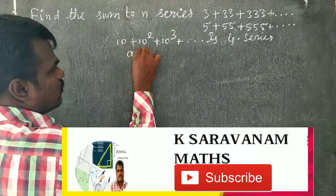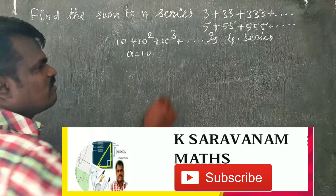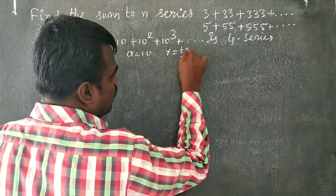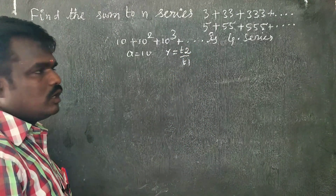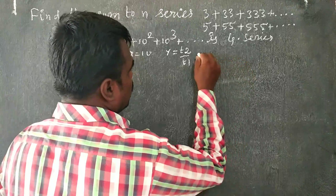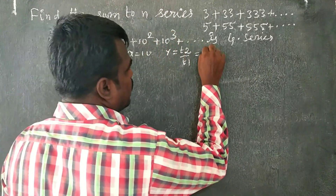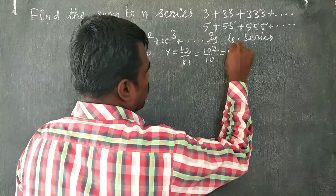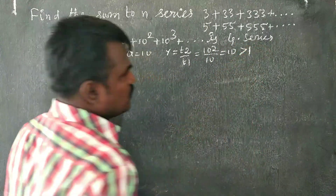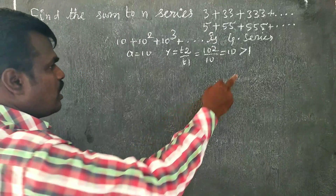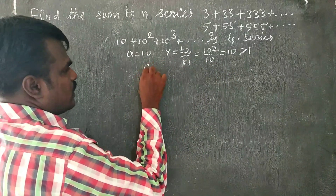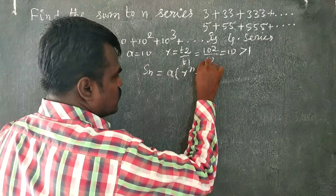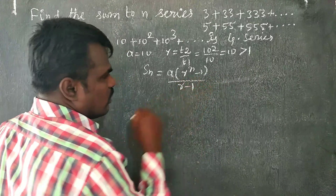Here we have a equal to 10, and the common ratio r equals T2 by T1, which is 10 squared by 10, so r equals 10, which is greater than 1. Since r is greater than 1, we use the formula Sn equal to a times r power n minus 1, divided by r minus 1.